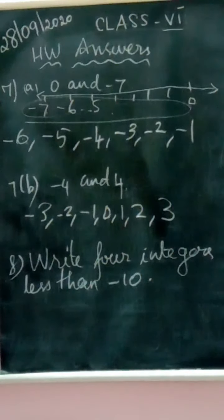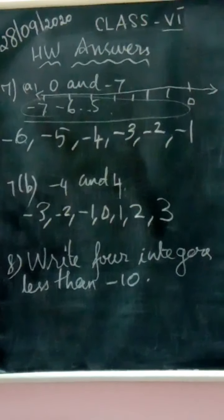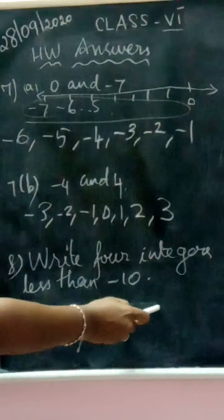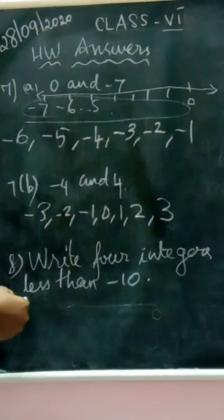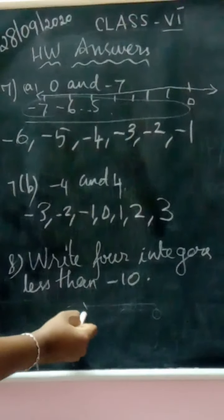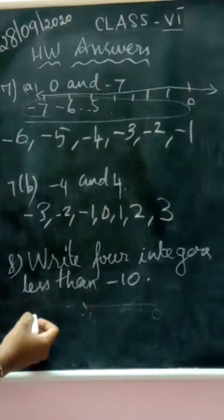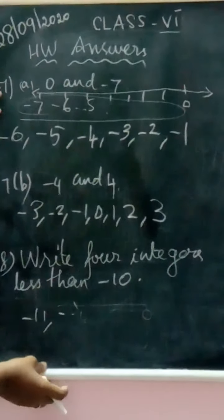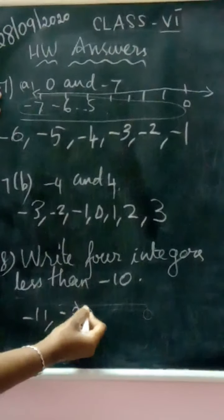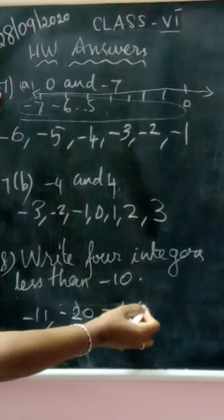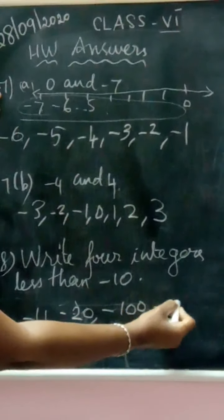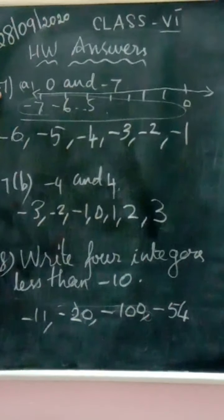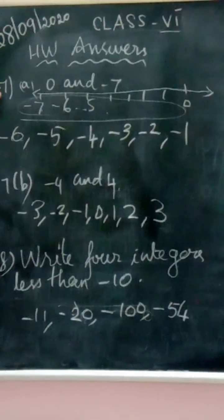Question 8: write 4 integers less than minus 10. Less than minus 10 means those numbers should be on the left side of minus 10 on the number line. Positive numbers are on the right and negative numbers are on the left. So on the left side of minus 10 you will have minus 11, minus 20, minus 100, minus 54 — like this there are many integers less than minus 10.